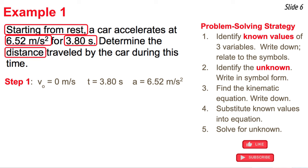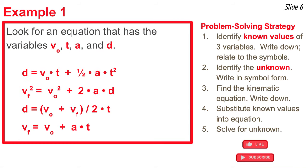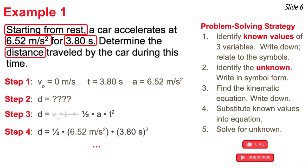It says determine the distance traveled by the car during this time. So what I'm looking for is distance. So in step two, I say D equal question mark. Now that I know three variables with known values and one with an unknown value, I'm going to look for the one equation amongst the list that has these four variables in it. I'm looking for the equation that has V original, time, A, and displacement, D. So when I go through my list, I notice it's the first equation. That's the one I want to use. So I write that equation down. There it is. Now the V original in this equation is actually zero. So the term V original T drops out of the equation. And then in step four, I substitute the known values in for A and for T, and I'm careful to square the T. I pull out my calculator, and in step five, I solve for the unknown. It comes out to be 47.1 meters. The displacement or the distance is 47.1 meters.